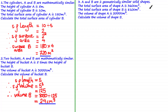A and B are two geometrically similar solid shapes. The total surface area of shape A is 360 centimeters squared, and the total surface area of shape B is 810 centimeters squared. The volume of shape A is 2000 centimeters cubed. Calculate the volume of shape B. Since the shapes are similar, we can find a scale factor of volume to calculate the volume of shape B.